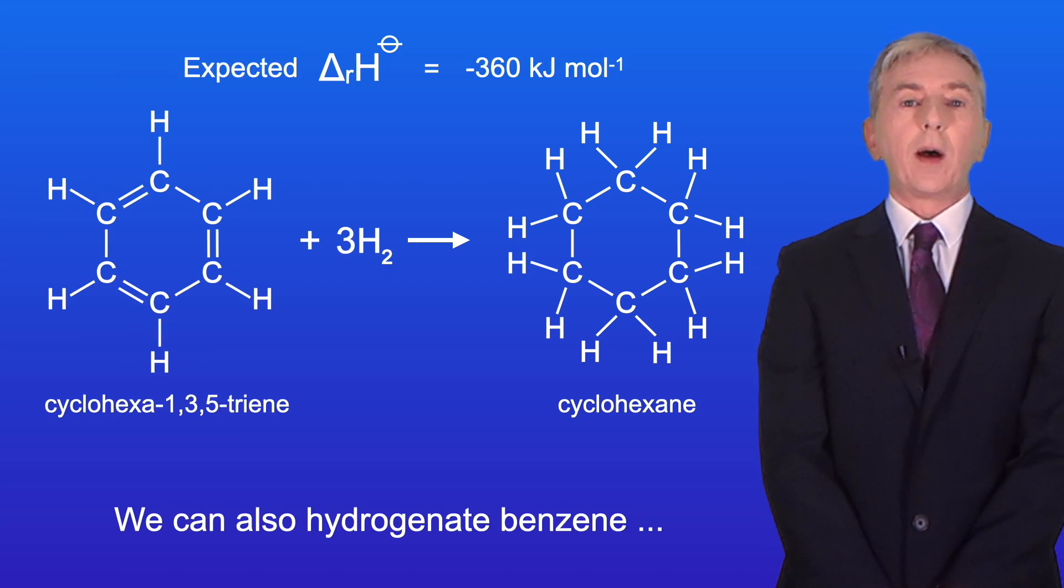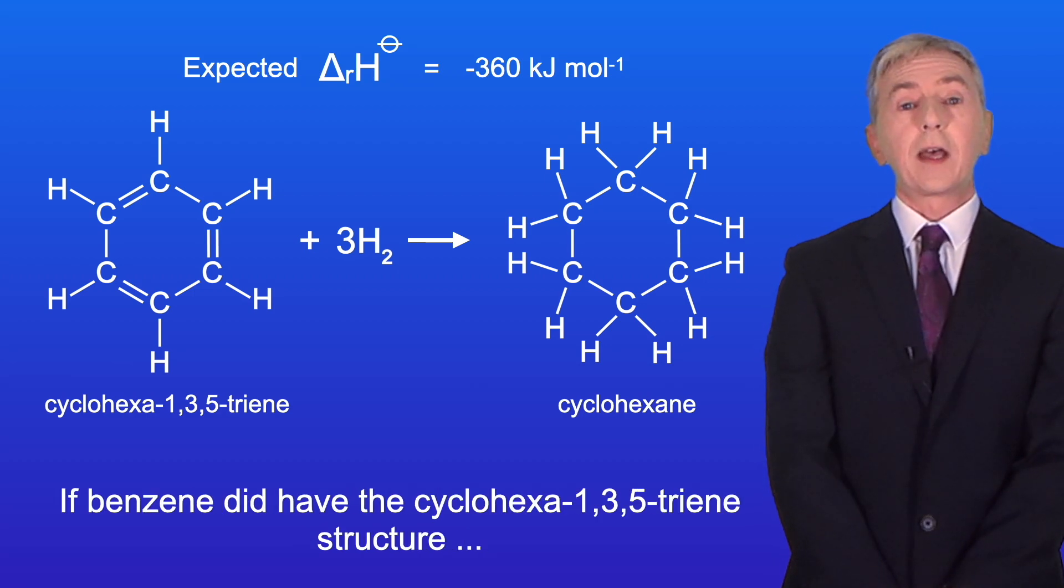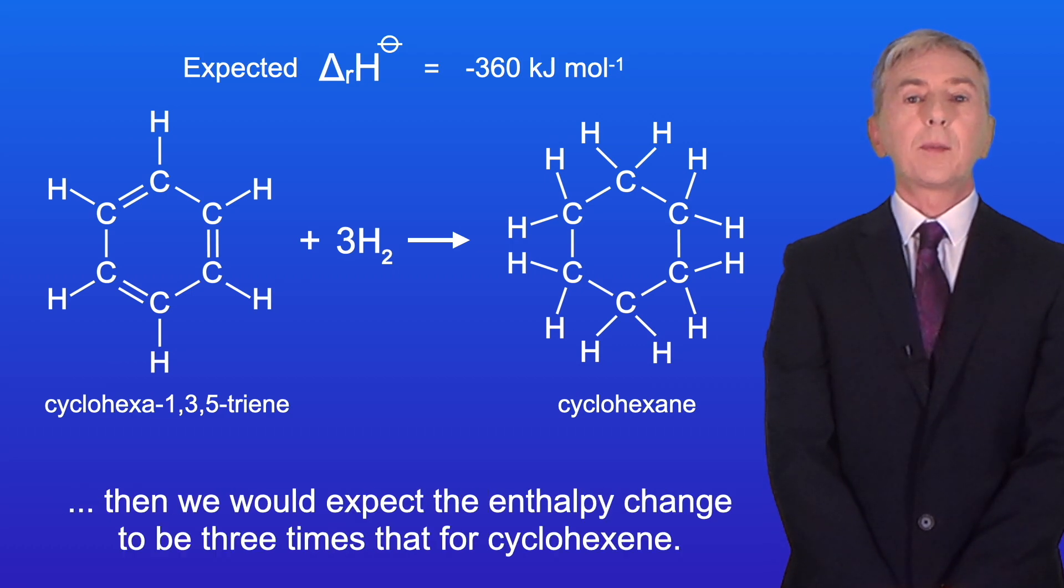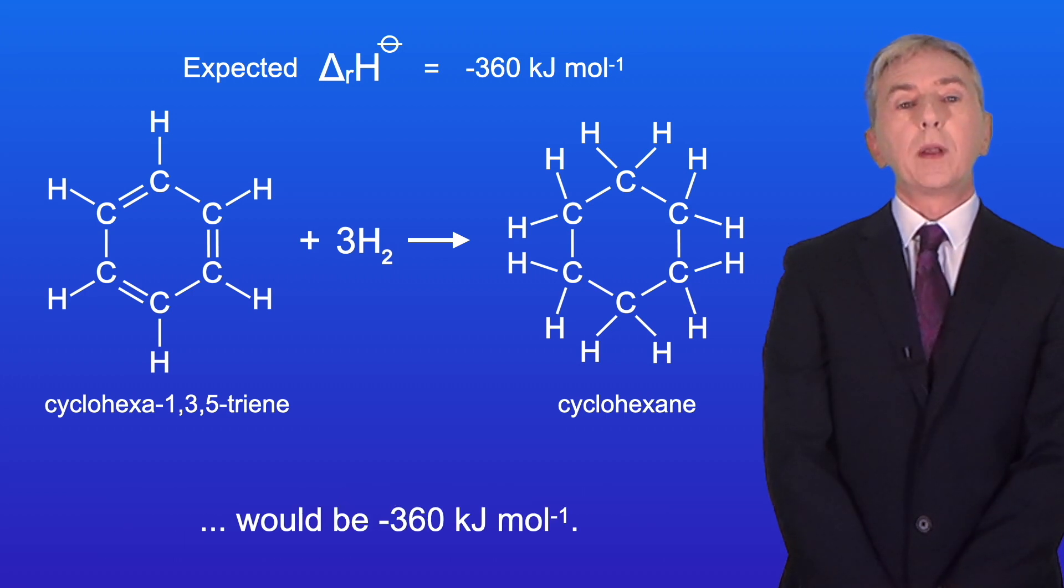We can also hydrogenate benzene and measure the enthalpy change of this reaction. Now if benzene did have the cyclohexa-1,3,5-triene structure, then we would expect the enthalpy change to be three times that for cyclohexene. In other words, the expected enthalpy change of hydrogenation of benzene would be minus 360 kilojoules per mole.